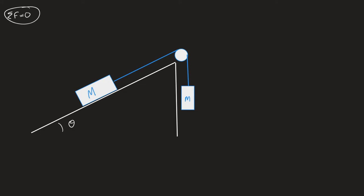If you're taking notes, understand that the system doesn't have to be at rest for net force to equal zero — if it's sliding at constant speed, it would still be true. There are some key words here to pay very close attention to: they say it's a smooth surface. That's code for frictionless.